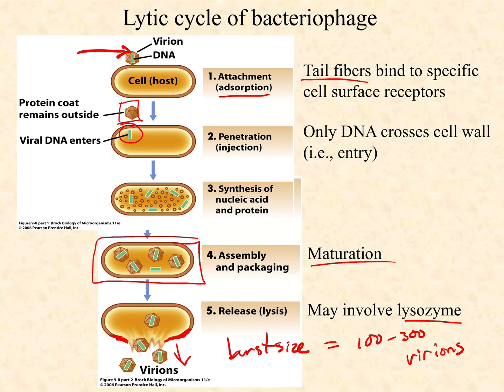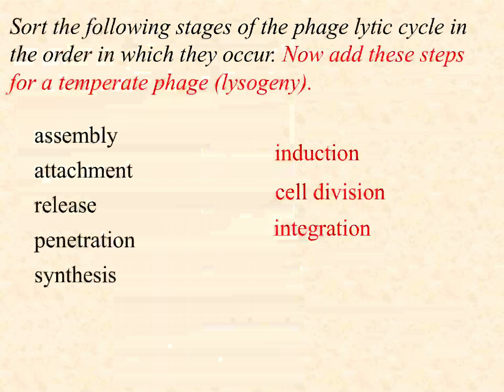That's the lytic cycle of phage. What we're going to see in a later video is that human viruses — the majority of them — follow this same pattern with a few key differences. But the majority of viruses that infect humans follow this pattern of a lytic cycle, just like we see with bacteriophage.